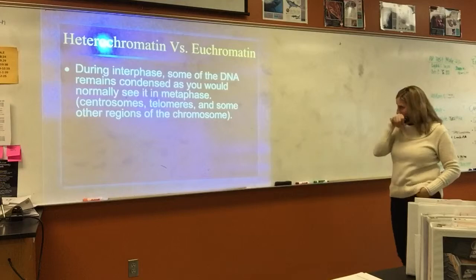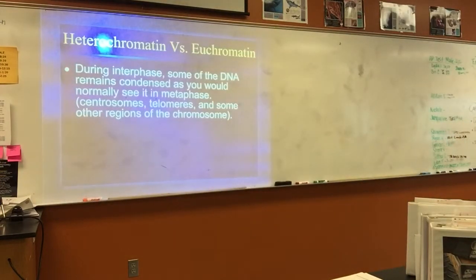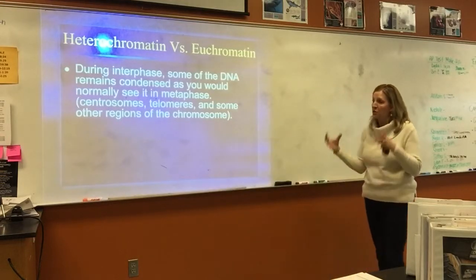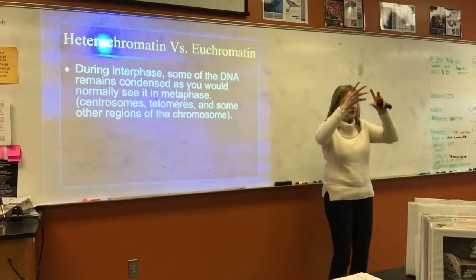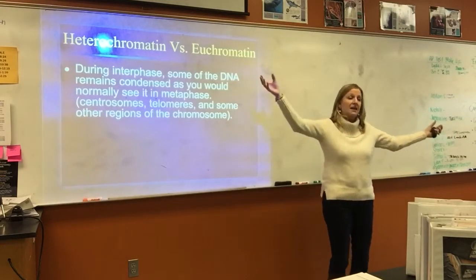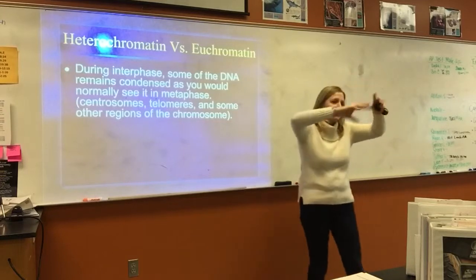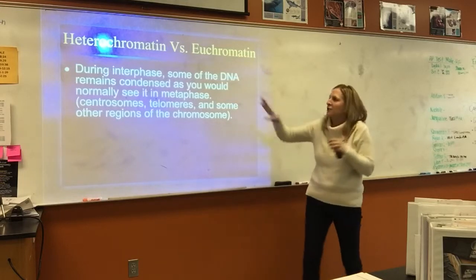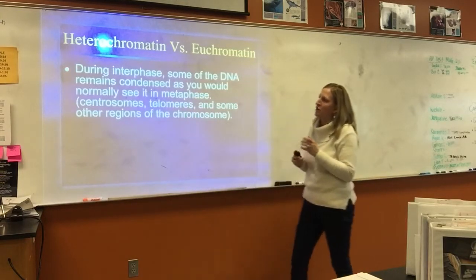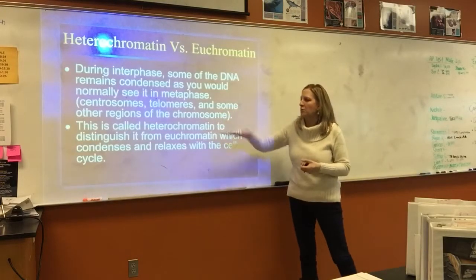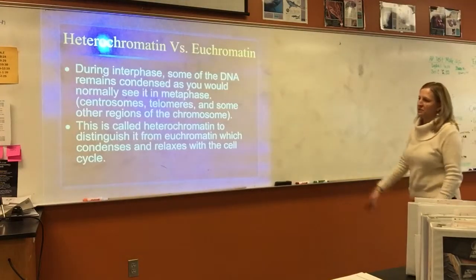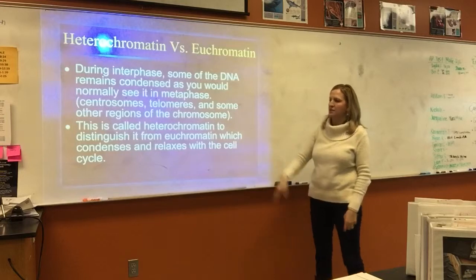During interphase, some of the DNA remains condensed as you would normally see it in metaphase. Examples include the centromeres, the telomeres — which are the ends — and some other regions of the chromosome. Most of the DNA is loosely packed, but certain sections still stay tightly packed. Those sections are called heterochromatin, to distinguish it from euchromatin, which is the part that unravels — euchromatin condenses and relaxes within the cell cycle.